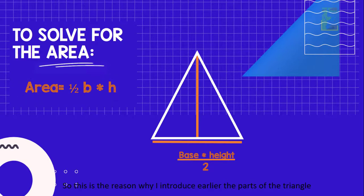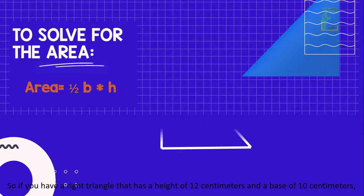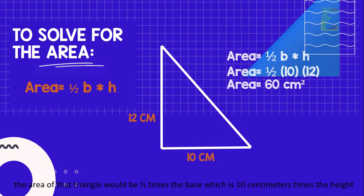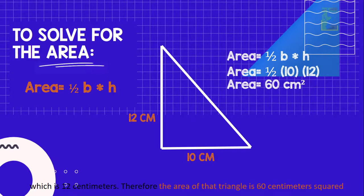So this is the reason why I introduced earlier the parts of the triangle. So if you have a right triangle that has a height of 12 cm and a base of 10 cm, the area of the triangle would be 1 half times the base which is 10 cm times the height which is 12 cm. Therefore, the area of the triangle is 60 cm squared.